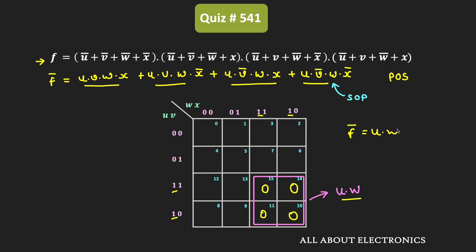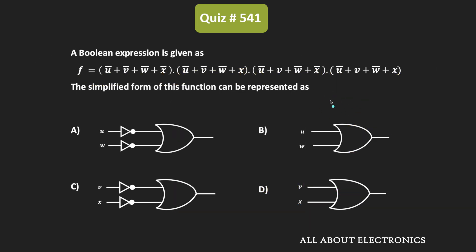Since we need the expression for F, we take the invert of F-bar: (u·w)̄, which by De Morgan's law equals ū + w̄. So the simplified boolean expression for F is ū + w̄. From the given options, option A corresponds to ū + w̄, where two NOT gates invert inputs u and w, and an OR gate combines them to give ū + w̄. Therefore, option A is the correct answer.